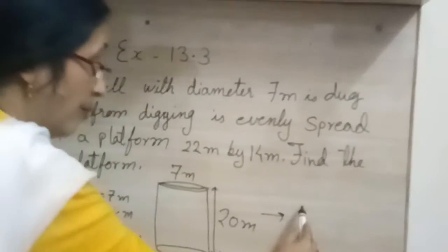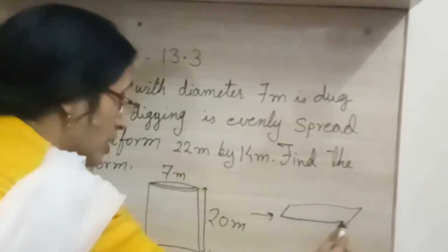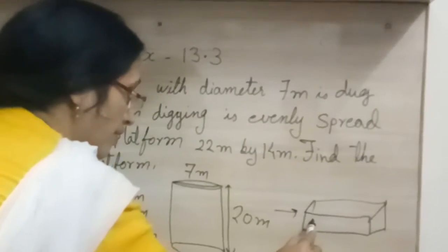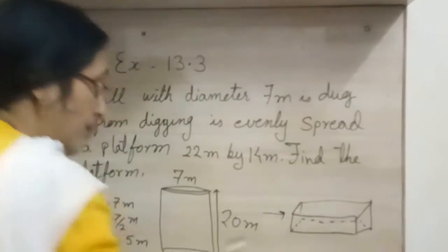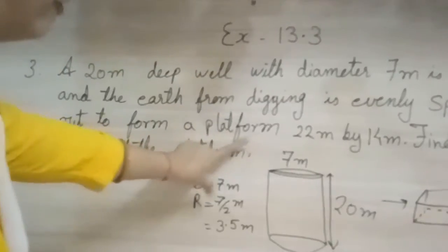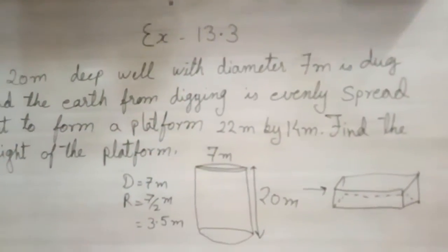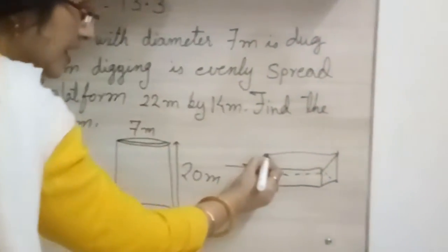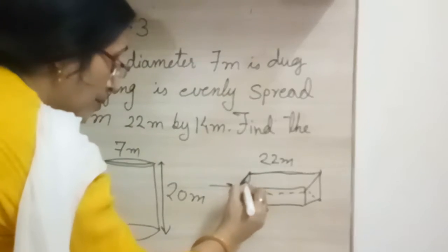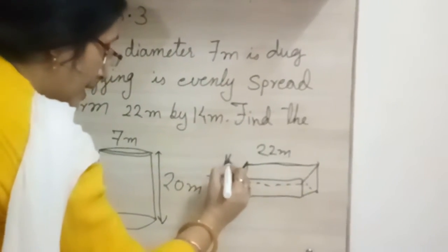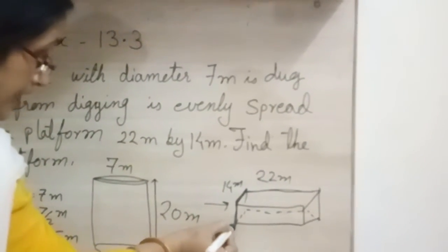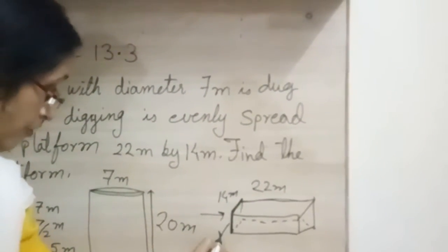From that mud, they are telling we have made one platform. Hum ne uska banaya platform, a place to sit. When we are talking we have made one platform. So then spread evenly to form a platform. 22 meter by 14 meter, means they are telling this from here to here it is 22 meter and breadth they are telling is 14 meter. Find the height of the platform. We have to find this height.